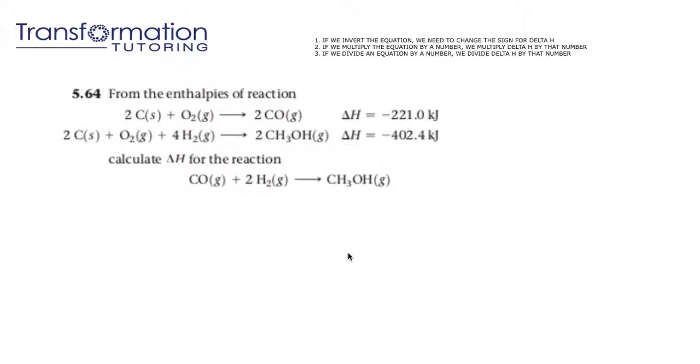Let's look at our problem. It says from the enthalpies of reaction and we are given two equations. Calculate delta H for the reaction. Now the reaction at the bottom is the one for which we are trying to find its delta H. We know the delta H for the two top reactions.